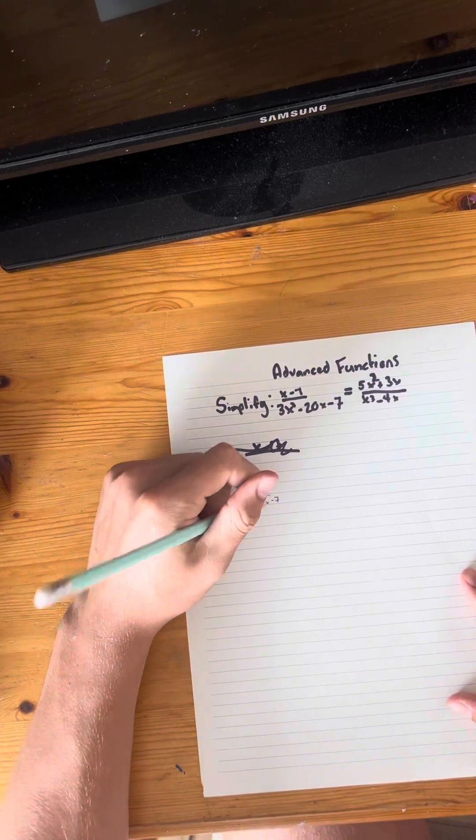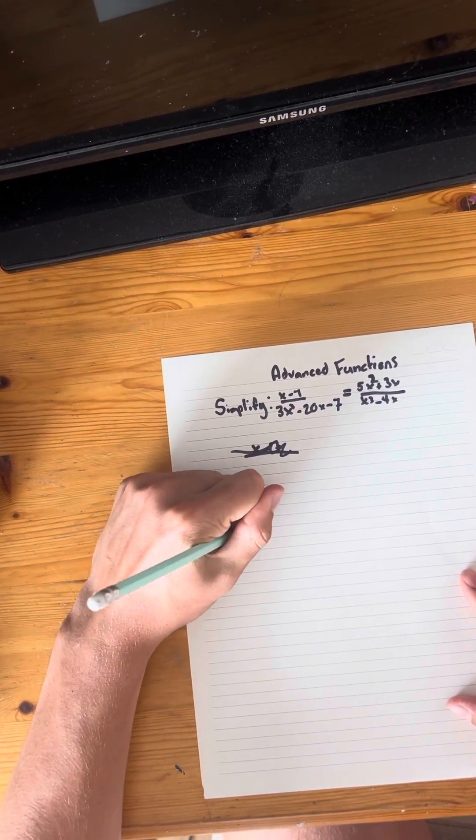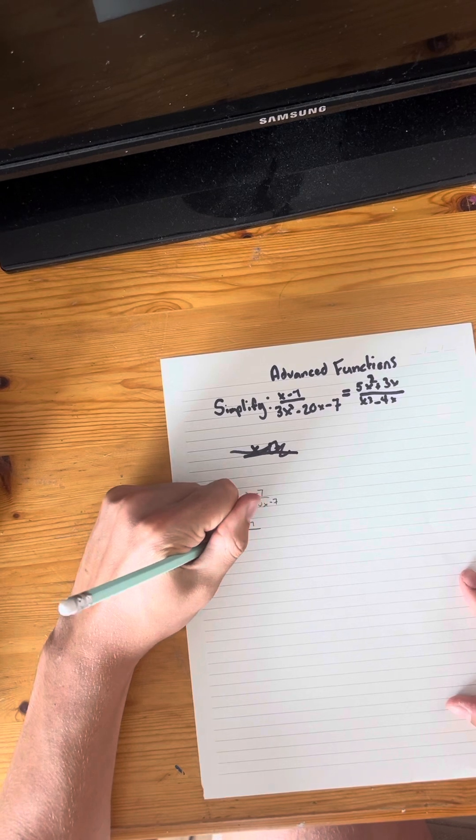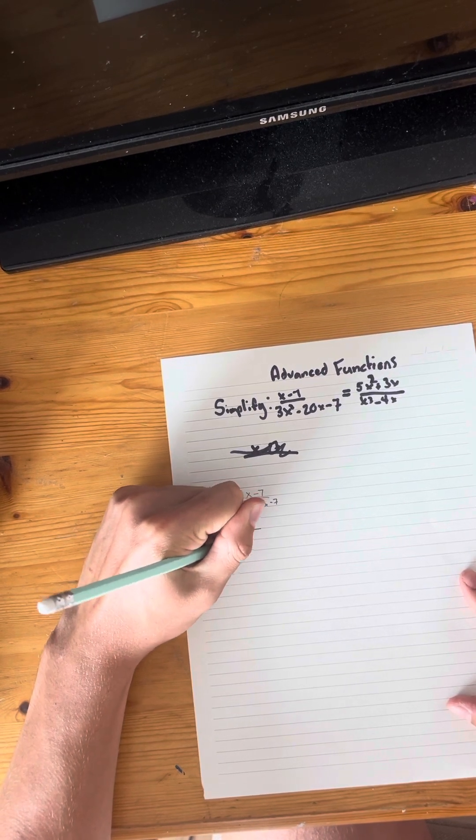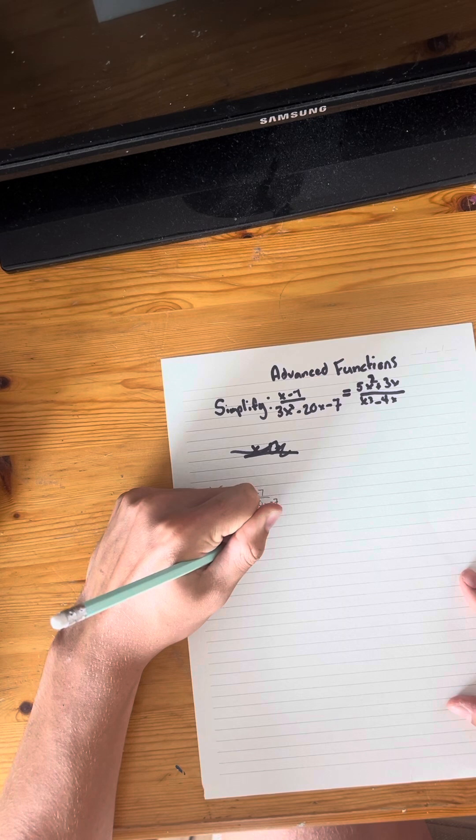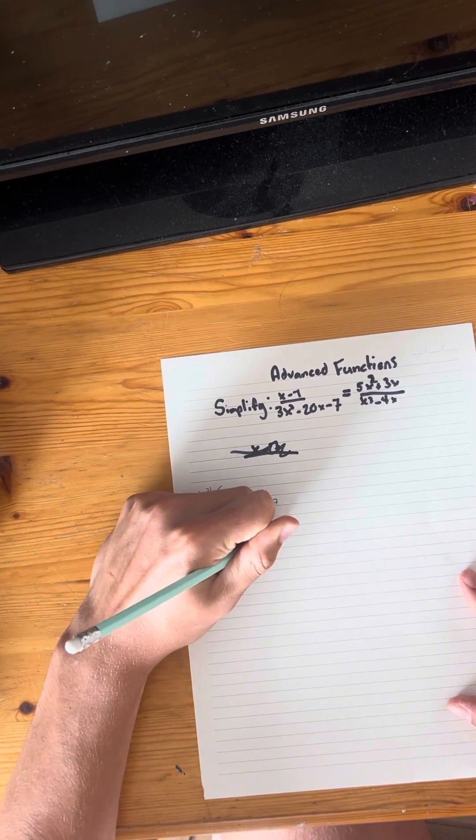So we're just going to plug that into our expression. x take away seven, 3x squared take away 21x plus 1x take away seven.